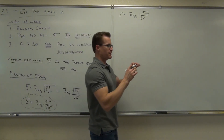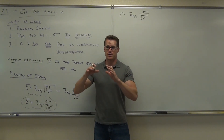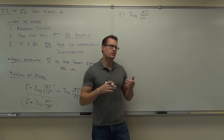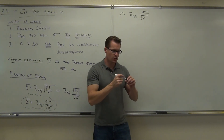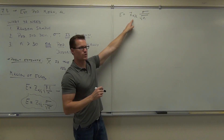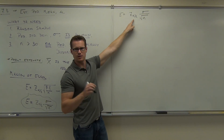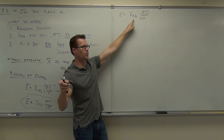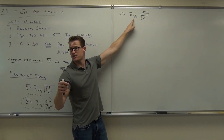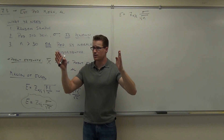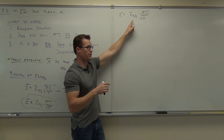So E equals z alpha over two times sigma over the square root of n. If e is the maximum difference between x-bar and mu, that's based on a certain level of confidence. For 90% confidence, the critical value is 1.645. For 95% — the most common one. And for 99% confidence the critical value gives you even more — the more confident you want to be, the larger the critical value, which is how you signify your confidence level.